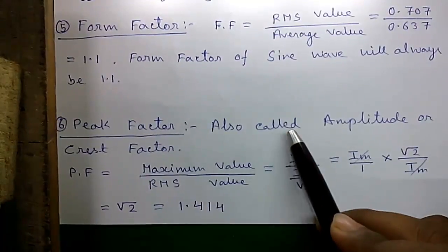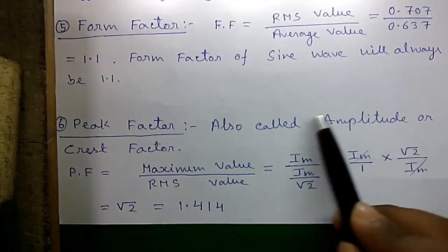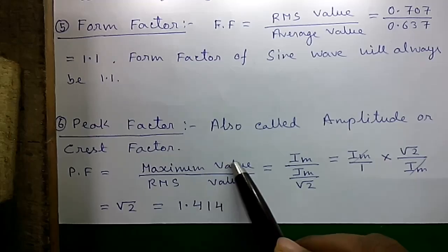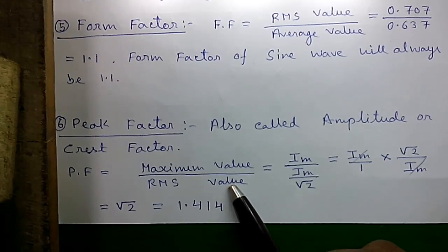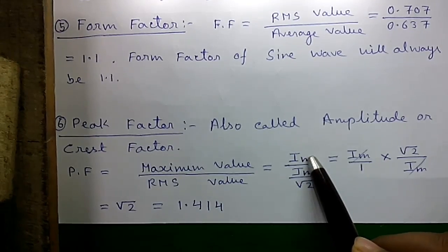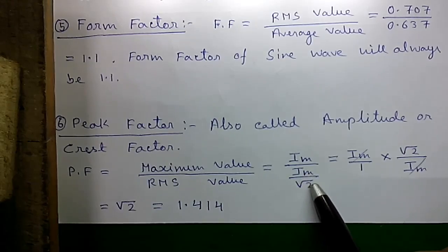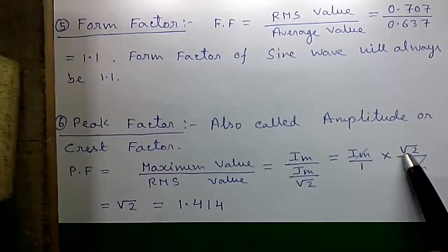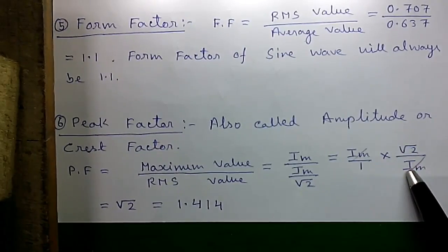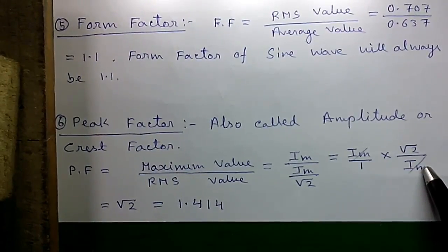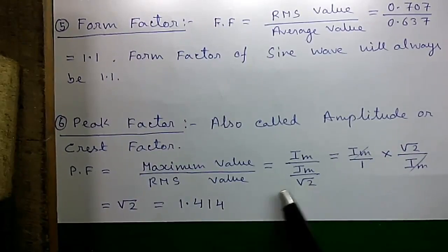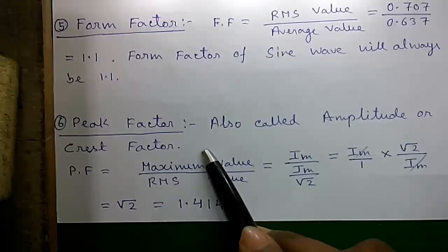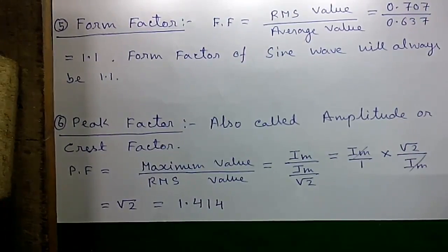Formula number 6, peak factor also called the amplitude factor or the crest factor. PF equals maximum value by RMS value. Maximum value is Im and RMS value is Im by root 2 for current. So it becomes Im by 1 into root 2 by Im. By eliminating Im you get root 2 by 1, which is root 2 equals 1.414. So peak factor is 1.414 for sine wave.